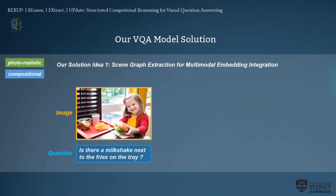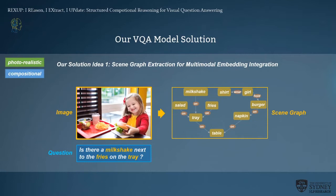We decided to move away from classical attention and traditional visual networks and apply two new solution ideas. First, we find a way to extract structured information from photorealistic images that can be easily aligned with textual questions. The scene graph is the solution, which shows the textual abstraction of an image, including objects and relations between objects. Moreover, it can be easily aligned with textual question words like milkshake, fries, and trays, which can be aligned with both image-based scene graphs and questions.